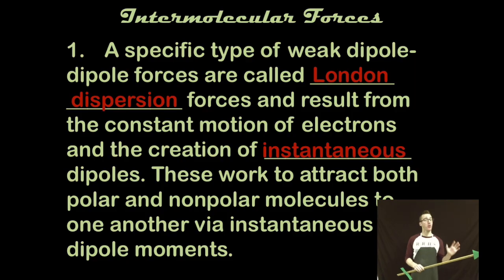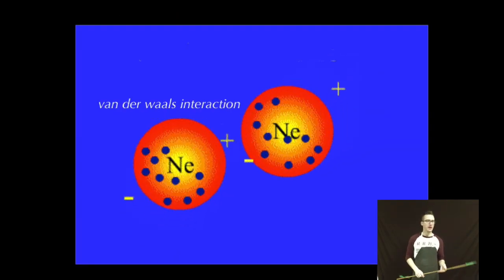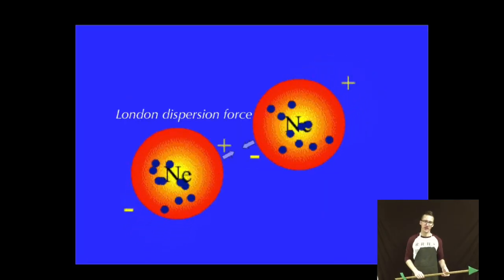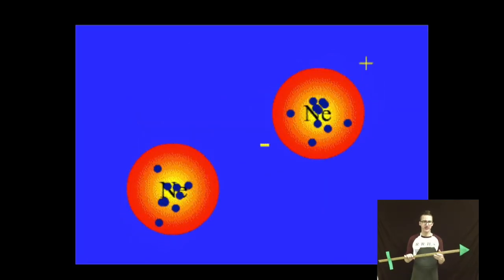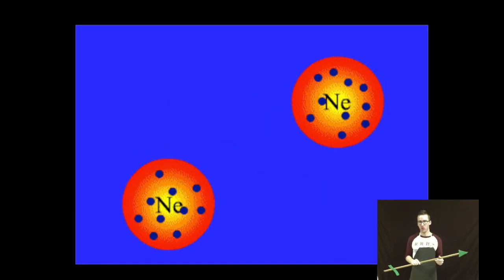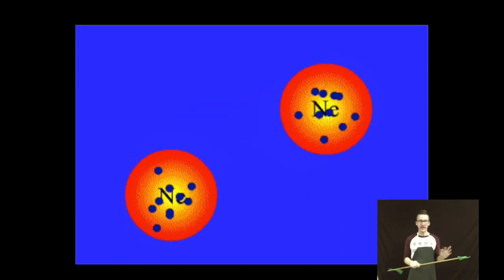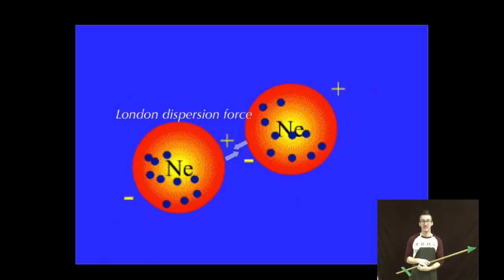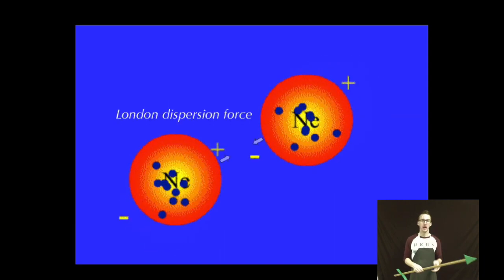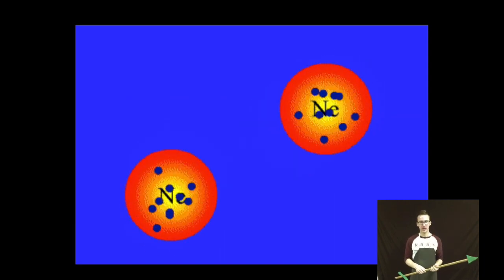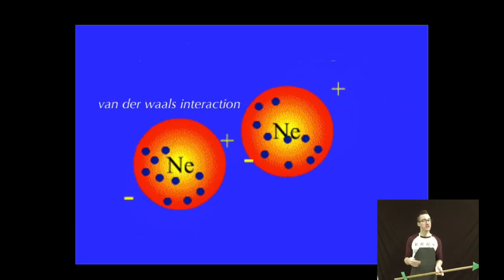Now these will work to attract both polar and nonpolar molecules. Now basically London dispersion forces are the creation of a very weak instantaneous dipole that is created briefly, instantaneously, momentarily, when the electrons in an atom are all on one side of the atom's electron cloud. But keep in mind the electrons are constantly moving. The dipole is only there for a brief moment before the electrons move and the dipole no longer exists.